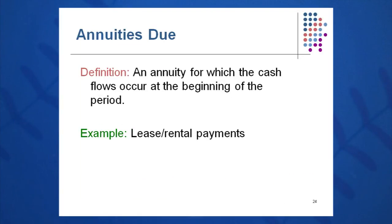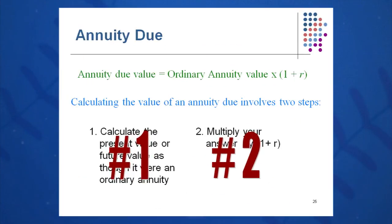One point on annuities due: the same amount each month, but these cash flows occur at the beginning of the month. Your real estate agent collects your rent at the beginning of the month — that is an annuity due, versus all the other examples we've been doing, which occur at the end of the month. To convert from an annuity due to a regular annuity, simply multiply the values by (1 + R). Take the present value or future value as an ordinary annuity and multiply the answer by (1 + R), and that gives you the extra money you get by having an annuity due.